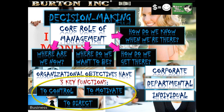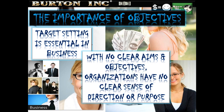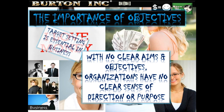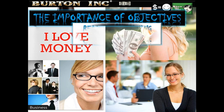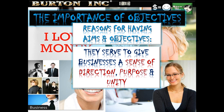We have different levels of objectives: overall corporate objectives, individual department objectives, and employees within a department may have individual objectives and targets themselves. Setting targets is essential in business — without targets a business tends to have no clear sense of direction or purpose. Aims and objectives give a business a sense of direction, purpose, and unity, which helps to unify and motivate management and workers.